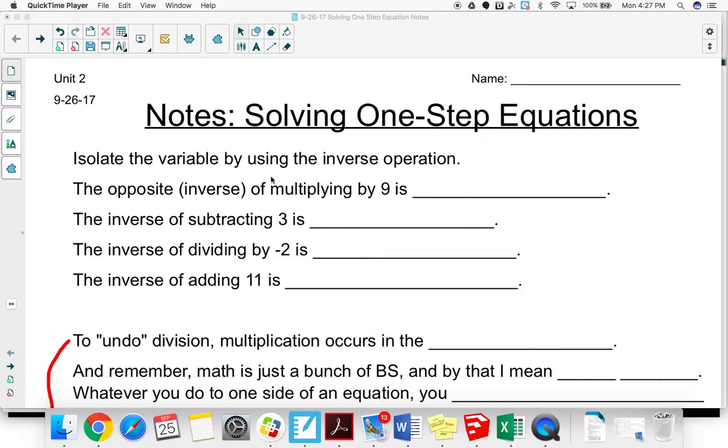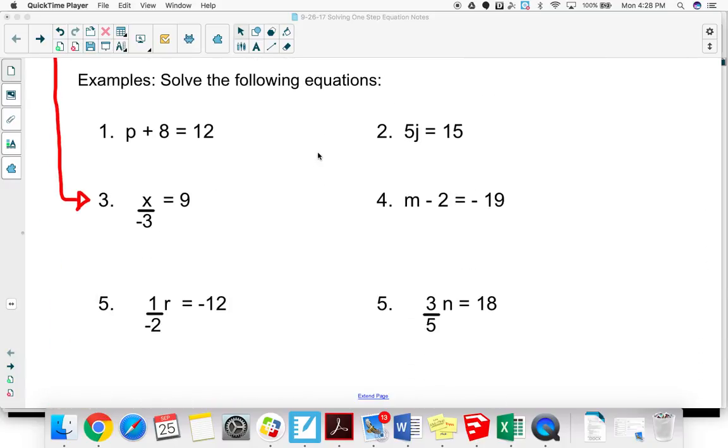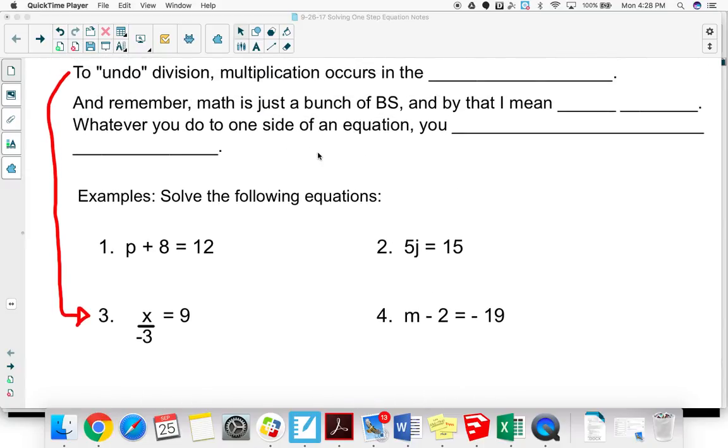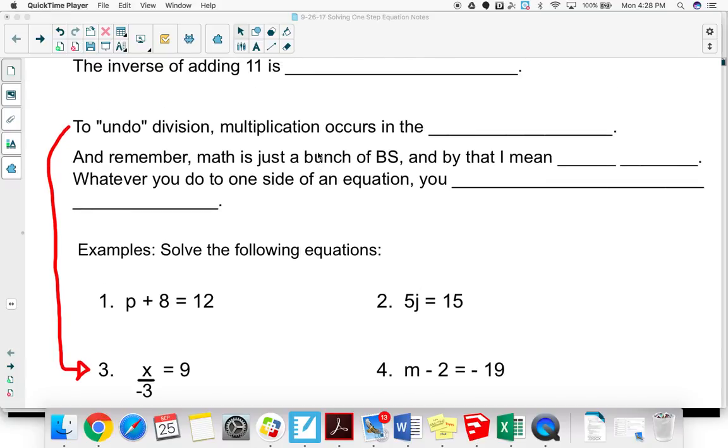Just a couple to refresh from what you learned last year. So one-step equations are basically what you see on the bottom of this handout. A one-step equation basically means we're either going to add, subtract, multiply, or divide to figure out what number would go in to satisfy this equation. So what could we replace the letter P with in number 1 to make the left side equal the right?